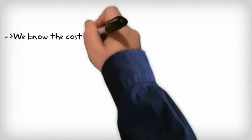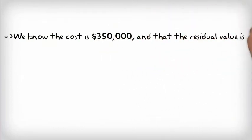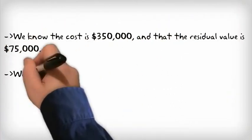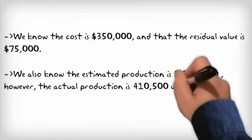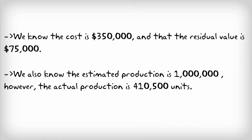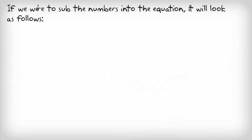We know that the cost is $350,000 and the residual value is $75,000. We also know the estimated production is 1 million units. However, the actual production is 410,500 units. If we were to sum the numbers into the equation, it would look as follows.